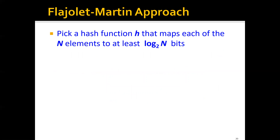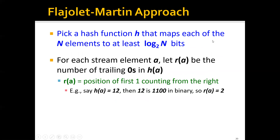One way to do this is to use the Flajolet-Martin approach. We first pick a hash function h that maps each of the n elements to at least log n bits. Then for each element a, let r(a) be the number of trailing zeros in h(a) — basically, r(a) is the position of the first one bit counting from the right.